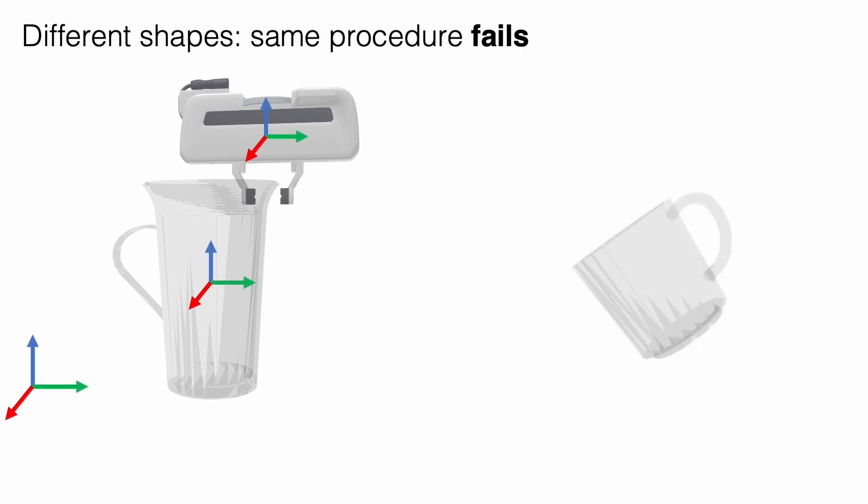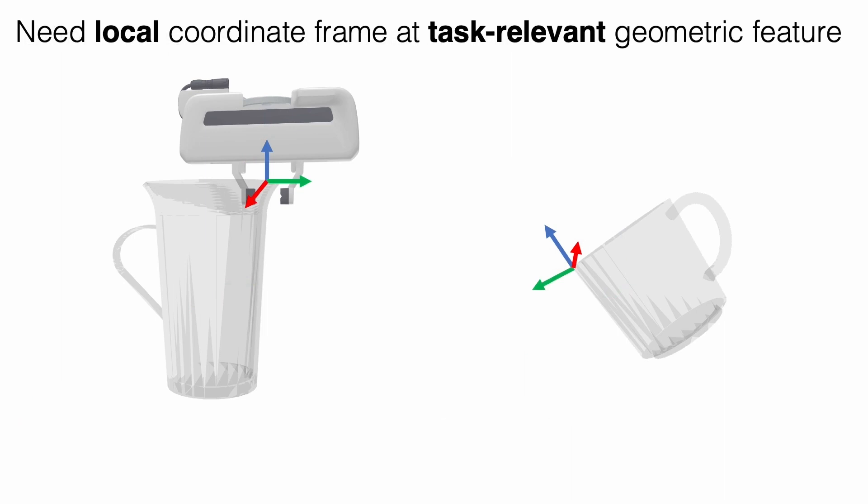But when the mug has a different shape, this procedure fails. Since the gripper must align to a local geometric feature, like the rim, and this feature changes location on the new shape, we must instead attach a local reference frame that moves with the task-relevant feature. Moving to the demonstrated grasp pose, expressed in the corresponding local frame on the new shape, can then align the gripper to the rim.